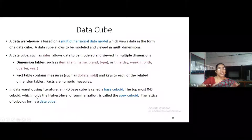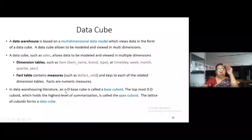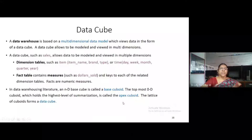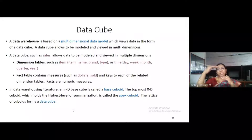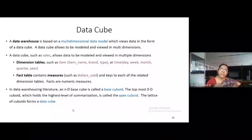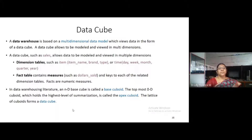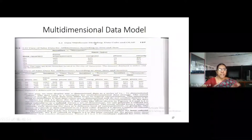In data warehousing literature, the nth dimension is called the base dimension and the topmost zeroth dimension is called the apex dimension. The lattice of cuboids forms a cube. The topmost cuboid is called the zeroth dimension cuboid and the bottommost cuboid is the base cuboid. This is the multidimensional data model.